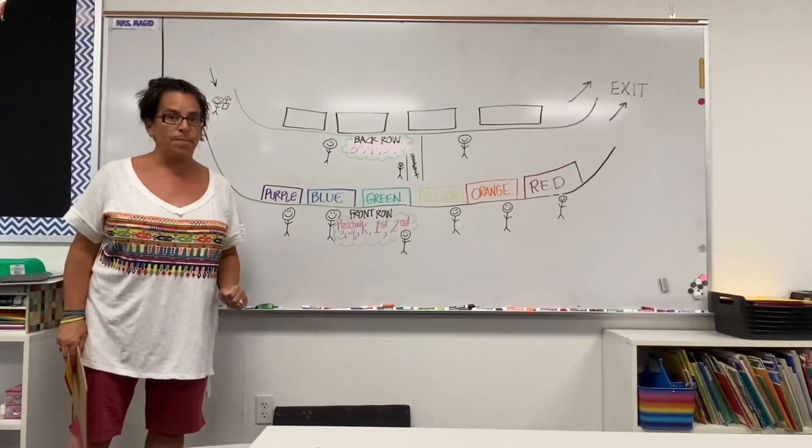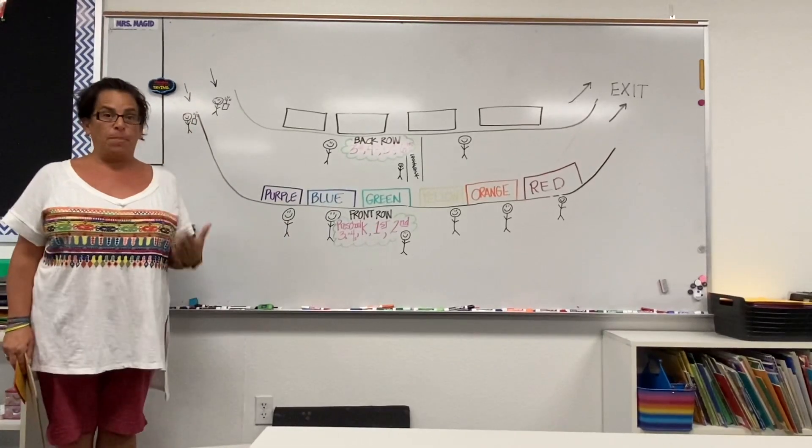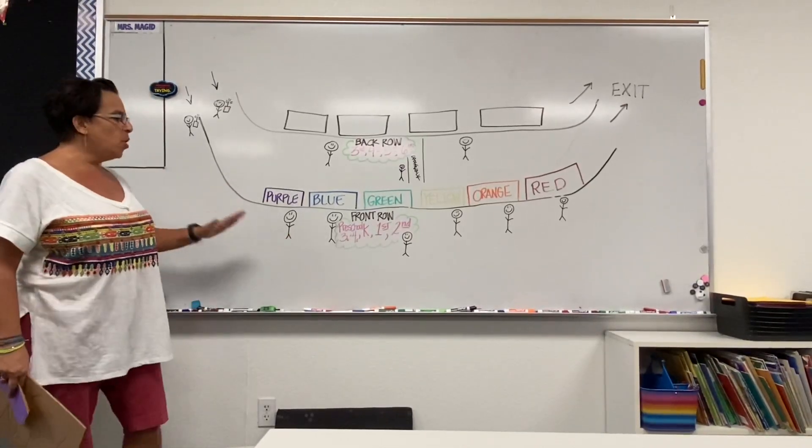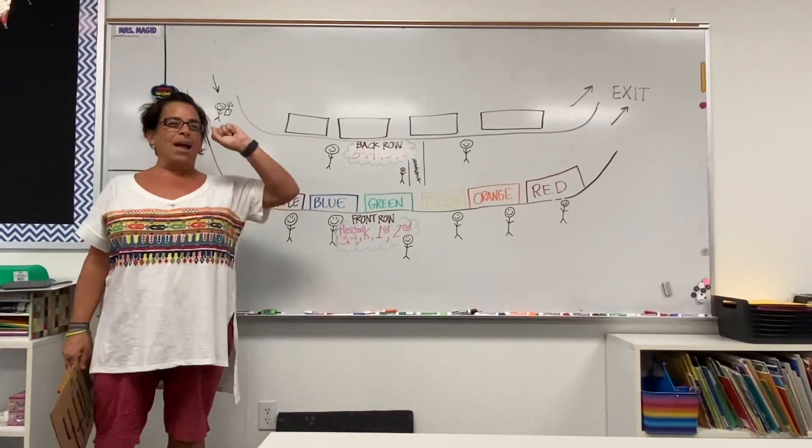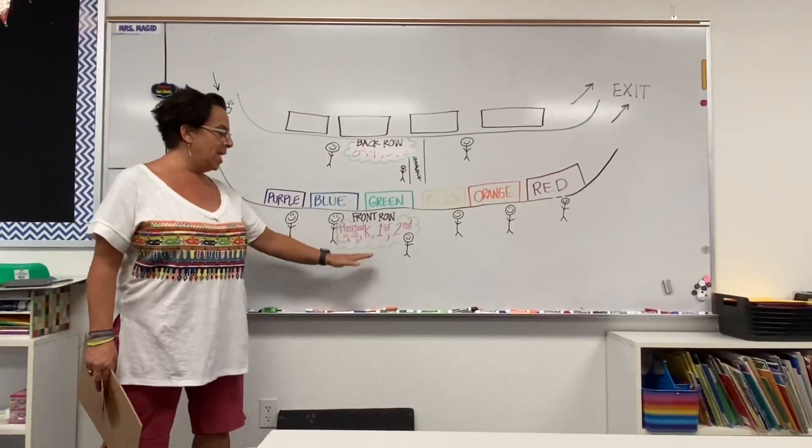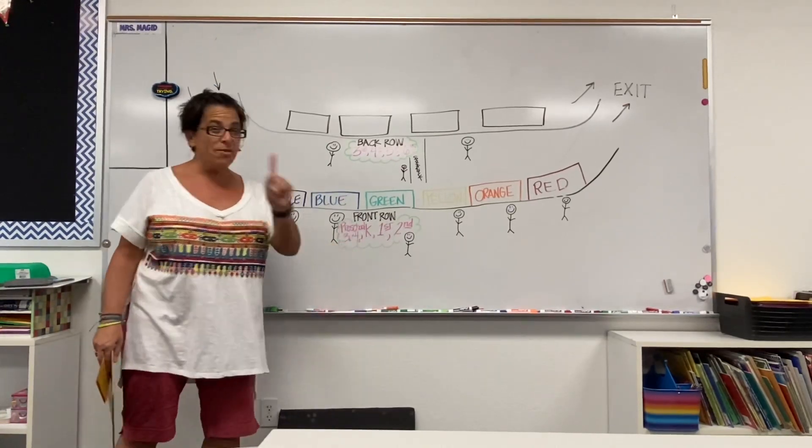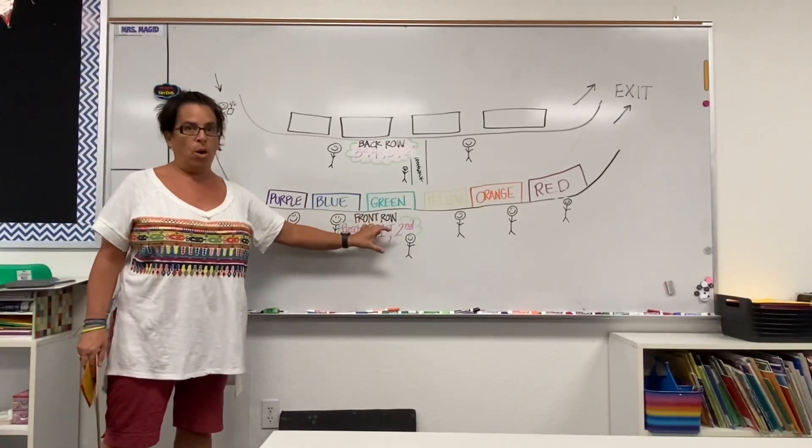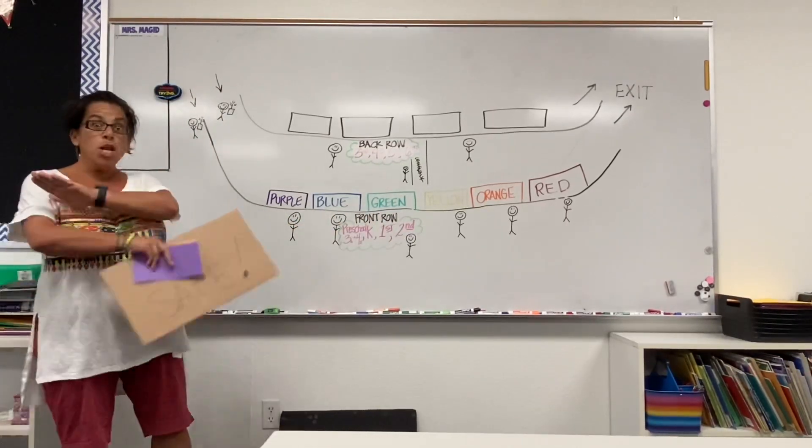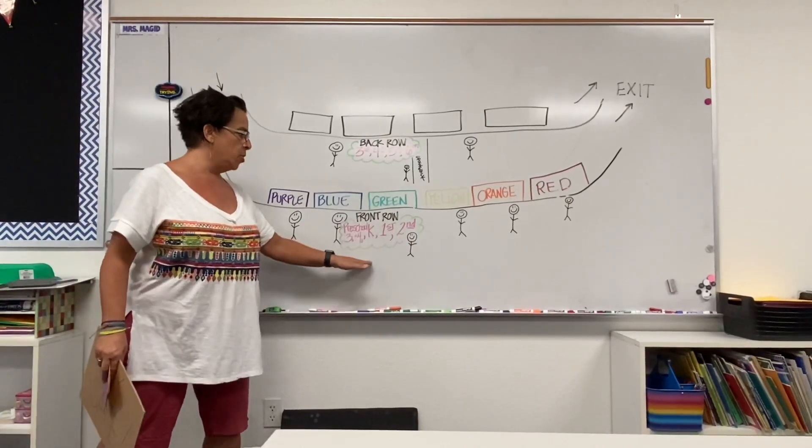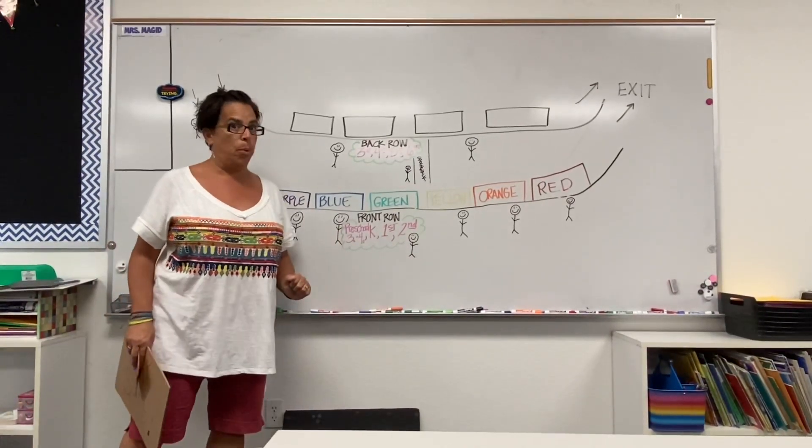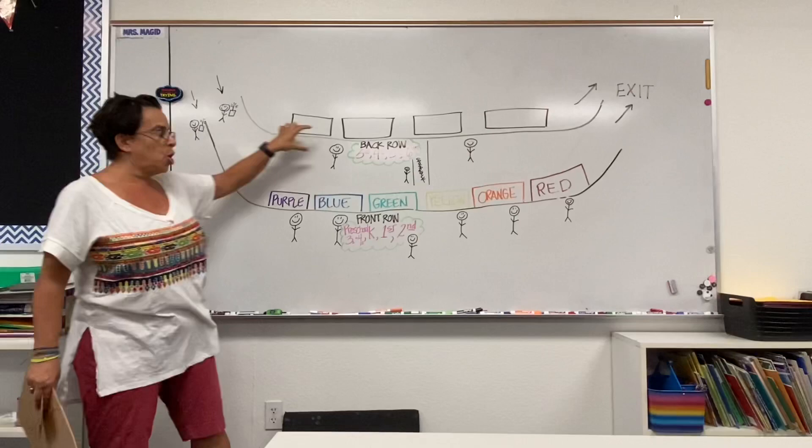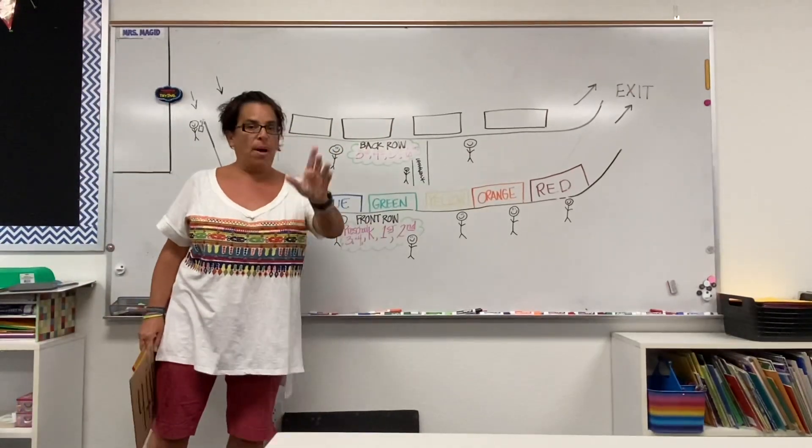We're going to still have our two rows. What you need to keep in mind as parents is really just the most important thing of which row you come into. If you have in your carpool even one preschooler, kinder, first or second grader, even just one of them, you must always pull into the front row of the school. If you have no preschoolers, kinders, first or second graders in your carpool, which means you only have third and elder, you must go into the back row. Keep that in mind.